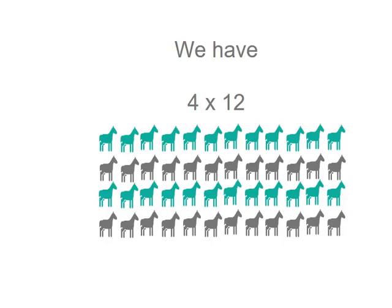So my number problem would be four groups of twelve, or four multiplied by twelve. You know that twelve plus twelve plus twelve plus twelve is the same as four groups of twelve, which equals forty-eight. So adding repeatedly is the same as groups of, which is multiplication.